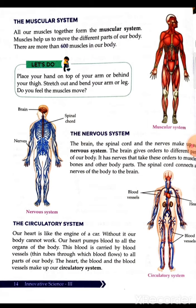The nervous system consists of the brain, the nerves, and the spinal cord. The nerves send all messages to the brain. The brain tells us what to do and what not to do, and communicates with our body through the help of the spinal cord and nerves. This is a very important organ system for the body.